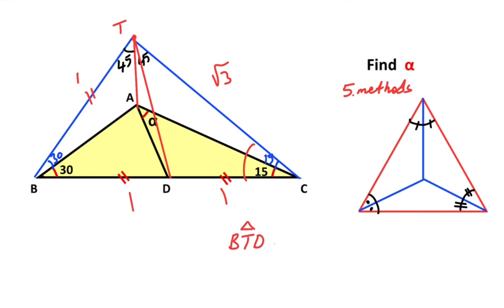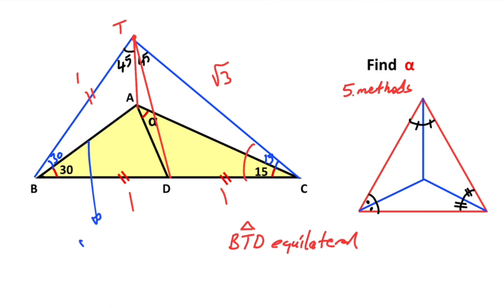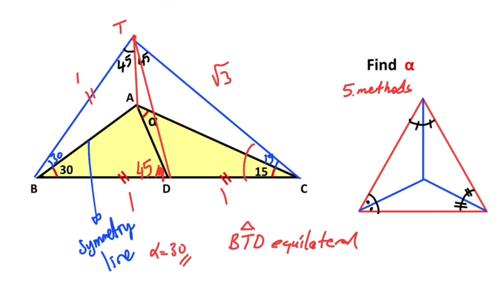So triangle BTD is an equilateral triangle, meaning line BA is a symmetry line. Therefore if here is 45 degrees, here is also 45 degrees. That means alpha is going to be 30 degrees.